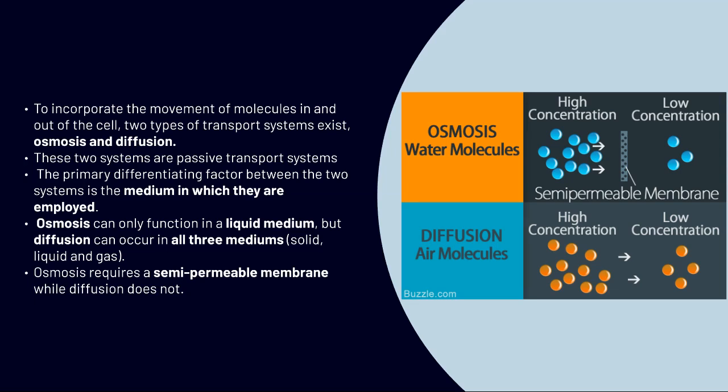And if you look to our image to the right, you get a visual of the difference between osmosis and diffusion and how osmosis has a semi-permeable membrane with its high concentration to low concentration. And then you have diffusion with the difference between high concentration to low concentration.